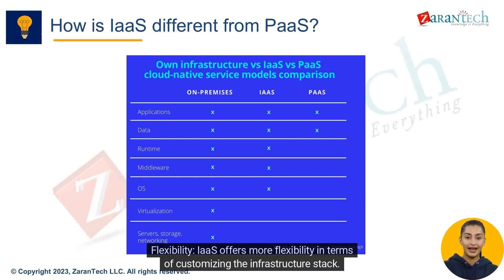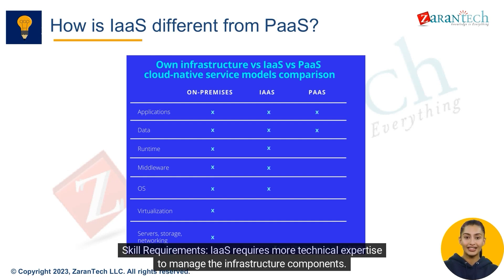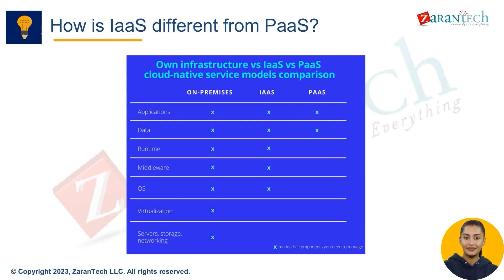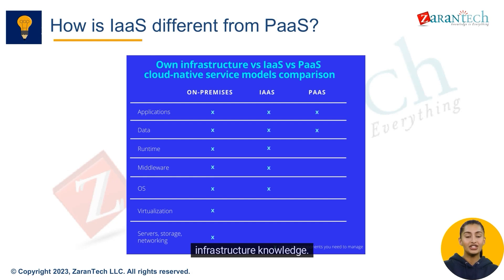In terms of flexibility, IaaS offers more flexibility for customizing the infrastructure stack, while PaaS provides a standardized platform with limited customization options. IaaS also requires more technical expertise to manage infrastructure components, whereas PaaS abstracts away many infrastructure complexities, making it more accessible to developers with less infrastructure knowledge.